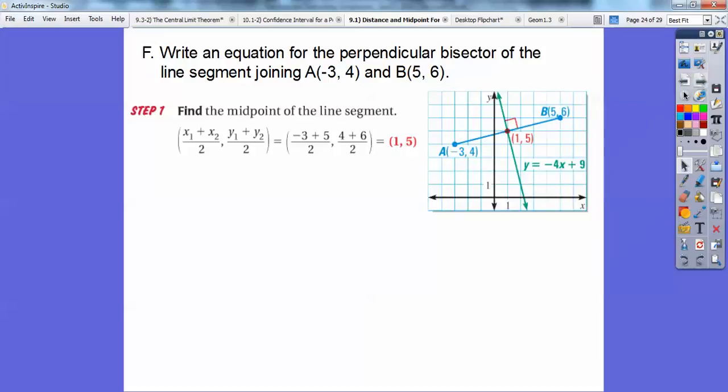Okay, so here's a picture. Here's negative 3, 4. That's A, negative 3, 4. You don't have to have a picture on this. And then B is over here at 5, 6. Okay, so here's that midpoint right here. And I think that's going to be the answer right there. I should have taken that out. Darn it. Oh, well.